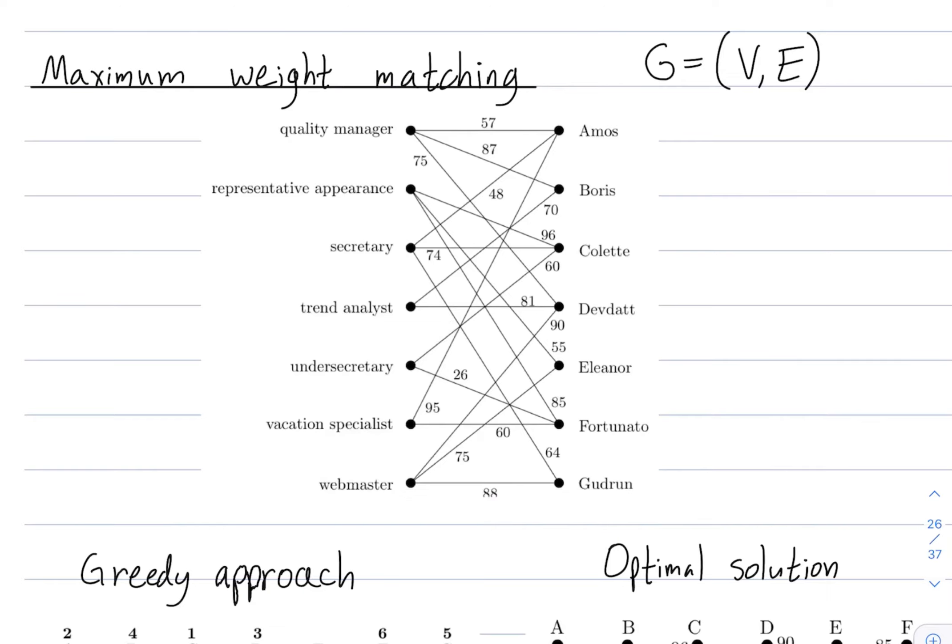Alright, welcome everybody. I wanted to describe the maximum weight matching problem. This is a problem in graphs. And I'll show you how to set it up as an integer linear programming problem. And then I'll remark how this is an easy integer linear programming problem in the sense that you can just solve a linear programming problem to solve the integer one.